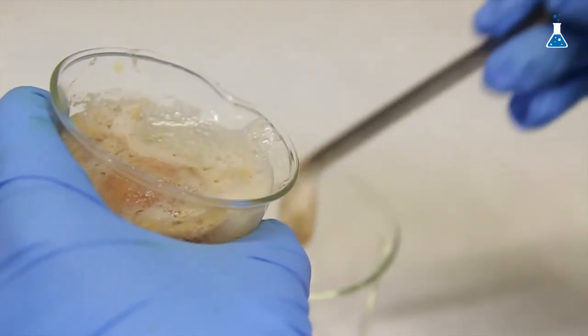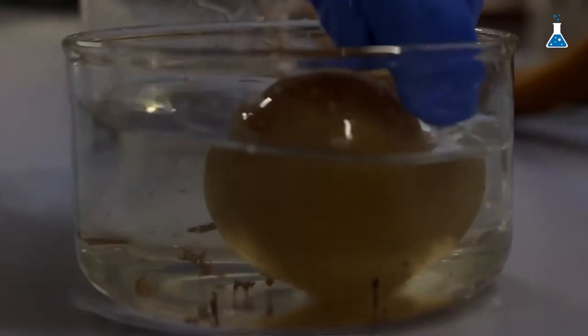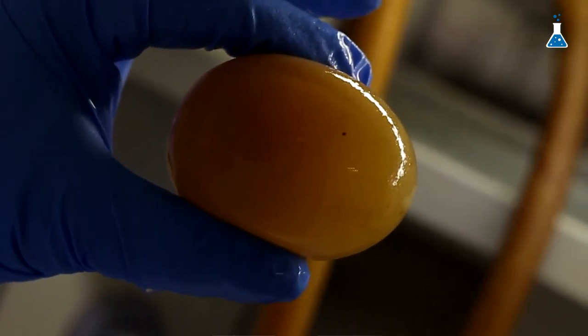After seven days, let's pour the vinegar down the drain and rinse it with tap water. We can see that the eggshell has been dissolved in the acidic media, but the membrane inside remains intact.